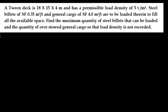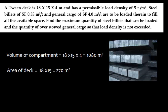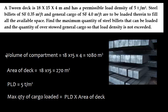Now let's solve a problem commonly asked in the second mate examination. A twin-deck compartment has dimensions 18 m × 15 m × 4 m and a permissible load density of 5 tons per square meter. Steel billets with a given storage factor and general cargo with a given storage factor are to be loaded to fill all available space. We need to find the maximum quantity of steel billets and the overstowed general cargo such that load density is not exceeded.